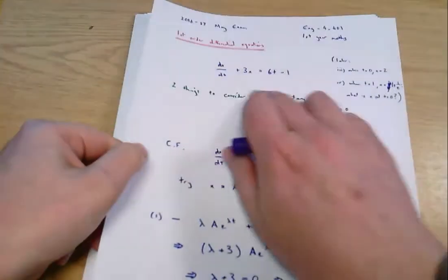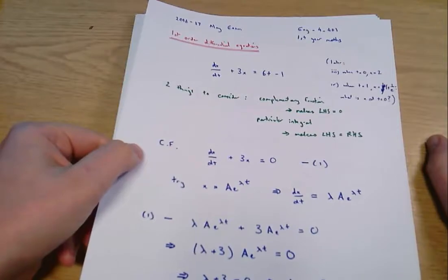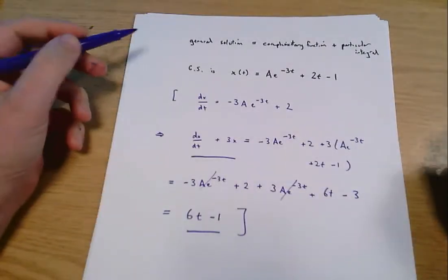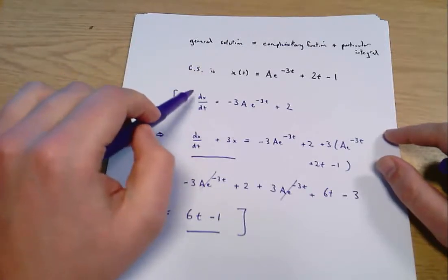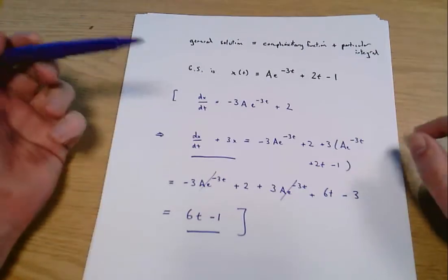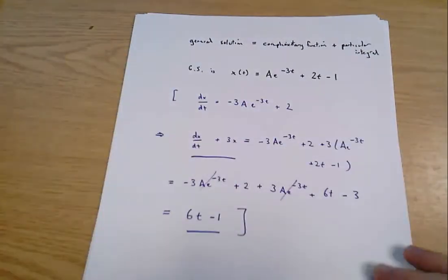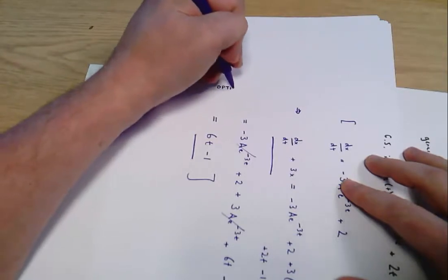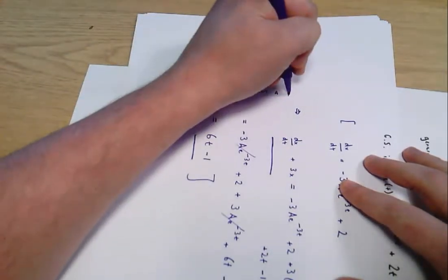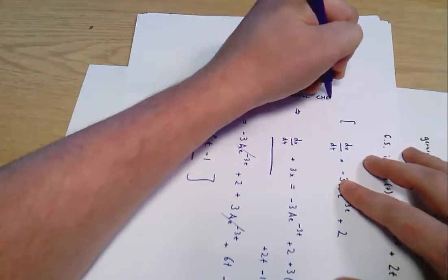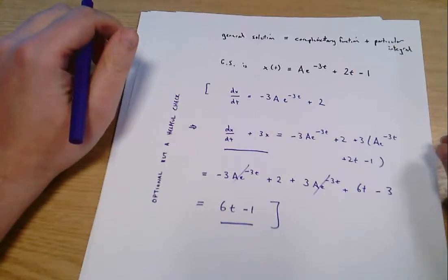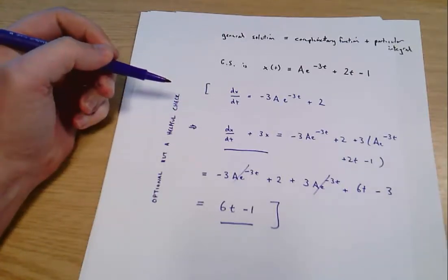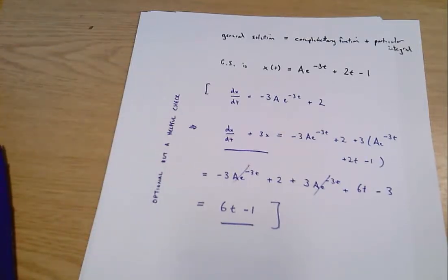The general solution we've chosen, when used as x in the differential equation, makes the left-hand side equal the right-hand side — that's what we were hoping for. You don't need to do this verification, but it's an optional and helpful check. In these questions we're doing quite a lot of algebra and it's easy to let a minus sign slip or forget to multiply through a bracket, so having different ways to approach the problem can catch potential mistakes.